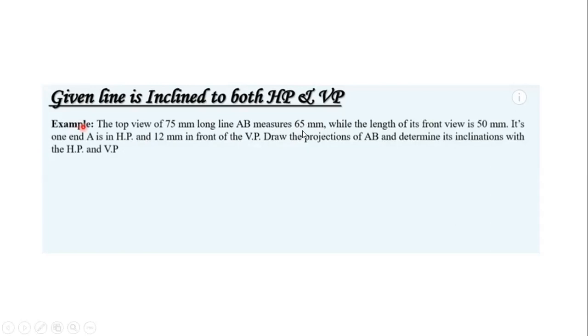But exactly this is not the top view length. The true length of the line AB is 75 mm, it measures 65 mm in top view. So the top view distance is 65 mm and the front view distance is 50 mm. Sometimes in order to test your understanding they will phrase the question in such a way.